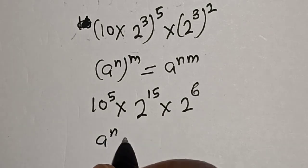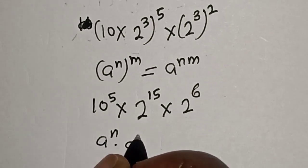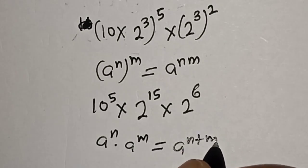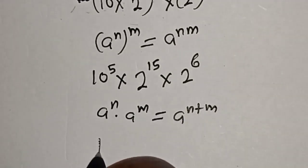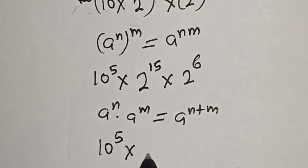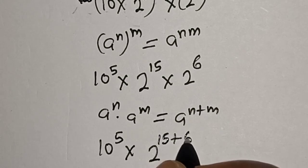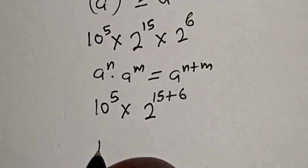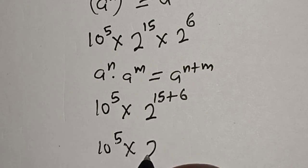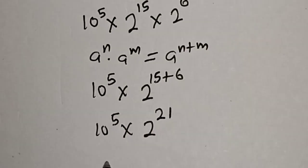Now remember this rule: a raised to power n multiplied by a raised to power m is equal to a raised to power n plus m. Then we have 10 raised to power 5 multiplied by 2 raised to power 15 plus 6, and this is 10 raised to power 5 multiplied by 2 raised to power 21.